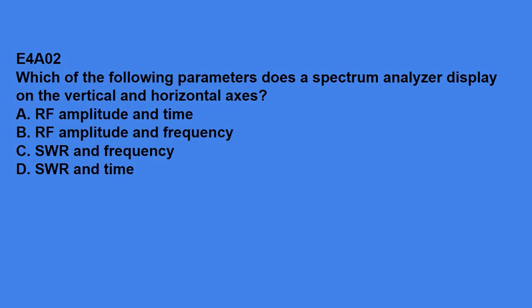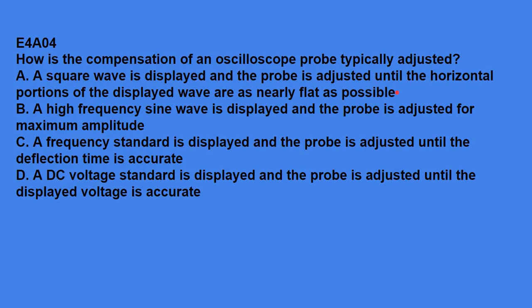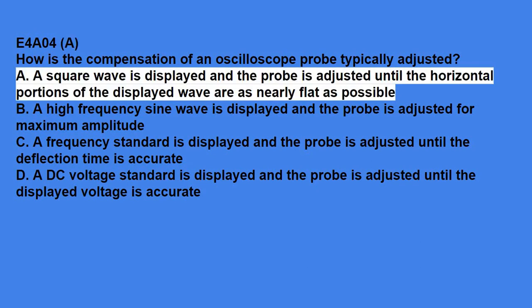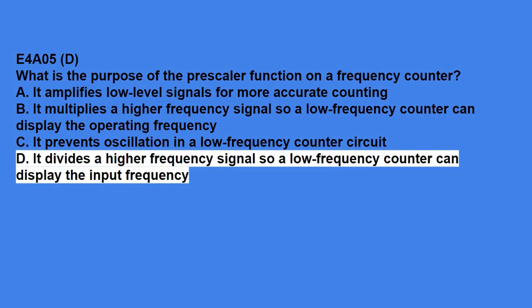E4A02, which of the following parameters does a spectrum analyzer display on the vertical and horizontal axis? The answer is RF amplitude and frequency. E4A03, which of the following test instruments is used to display spurious signals and intermodulation distortion products generated by an SSB transmitter? The answer is a spectrum analyzer. E4A04, how is the compensation of an oscilloscope probe typically adjusted? The correct answer is a square wave is displayed and the probe is adjusted until the horizontal portions of the displayed wave are as nearly flat as possible. E4A05, what is the purpose of the prescaler function on a frequency counter? It divides a higher frequency signal so the lower frequency counter can display the input frequency.